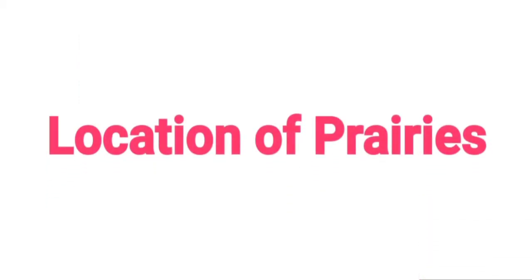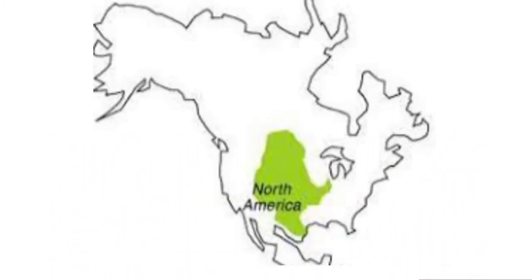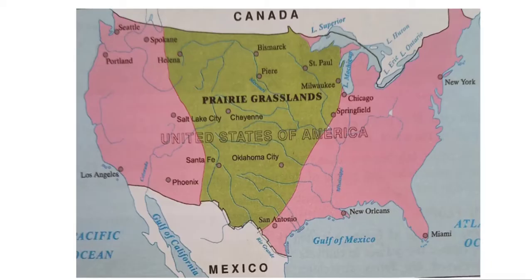If we talk about the location of prairies, the prairies are located in the interior of North America in the northern hemisphere. This grassland extends from Canada to Mexico and covers a large part of this area.